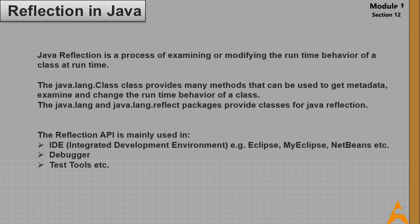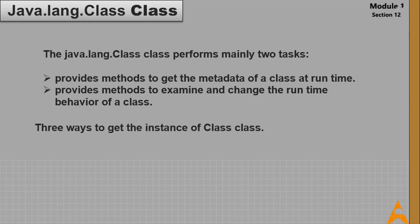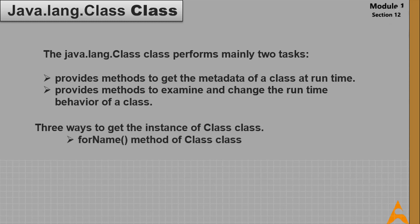The java.lang.Class class performs mainly two tasks: it provides methods to get the metadata of a class at runtime, and provides methods to examine and change the runtime behavior of a class. There are three ways to get an instance of Class: the forName() method of Class, the getClass() method of Object class, and the .class syntax.